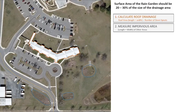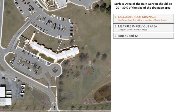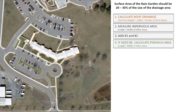The next step is to measure the impervious surfaces that will drain to your rain garden. This includes, but is not limited to, driveways, patios, walkways, and sidewalks. Once you determine what the roof drainage and impervious areas are, add these two numbers together for your total impervious surface area. If you are capturing runoff from pervious surfaces such as your lawn, determine the surface area that will drain to the rain garden.